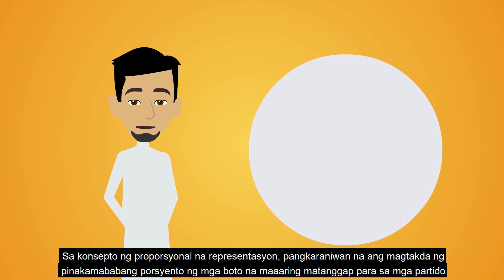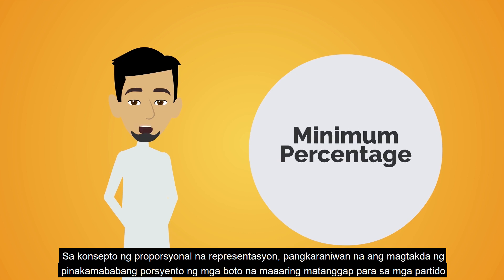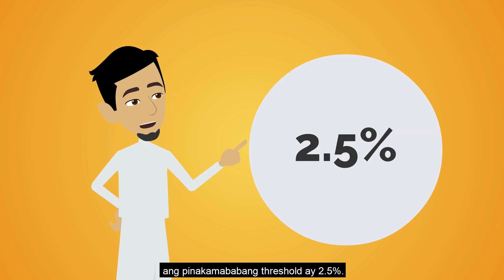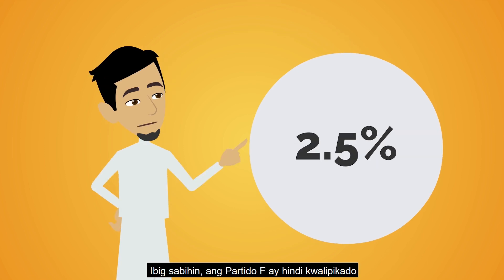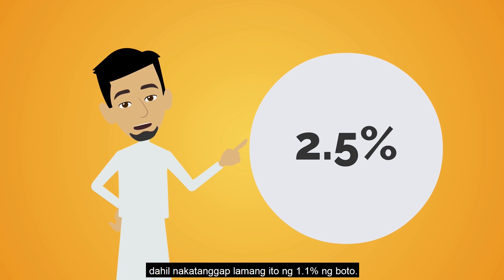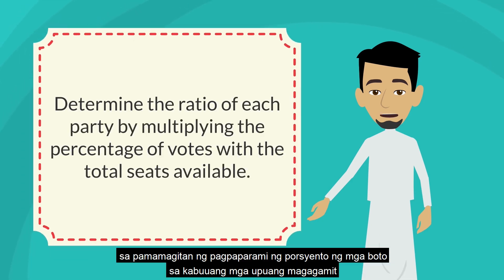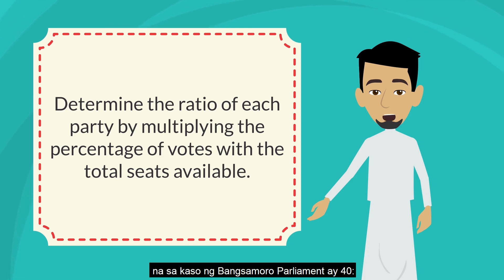In proportional representation, it is common to set a minimum percentage of votes received for parties. In this example, the minimum threshold is 2.5 percent. In this case, Party F is disqualified, as it only received 1.1 percent of the votes. The next step is to determine the ratio of each party by multiplying the percentage of votes with the total seats available, which, in the case of the Bangsa Moro Parliament, is 40.